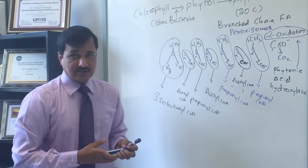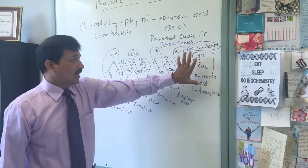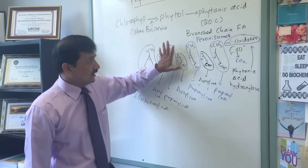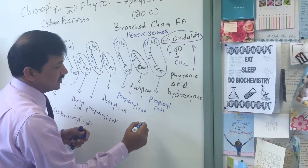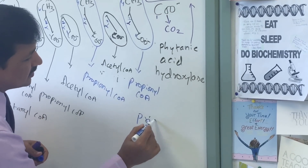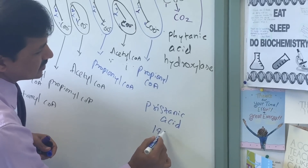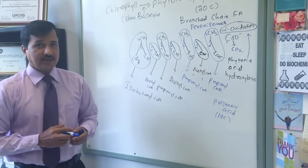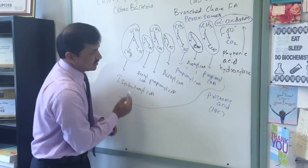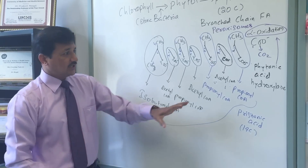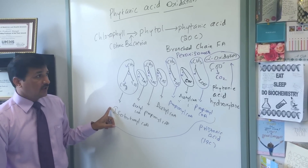At the end of all these oxidations: initially we did alpha oxidation to remove the first carbon as carbon dioxide. The 19-carbon fatty acid left after alpha oxidation is called pristanic acid. Pristanic acid is the 19-carbon branched chain fatty acid. Pristanic acid is oxidized into three propionyl-CoA, three acetyl-CoA, and one isobutyryl-CoA.